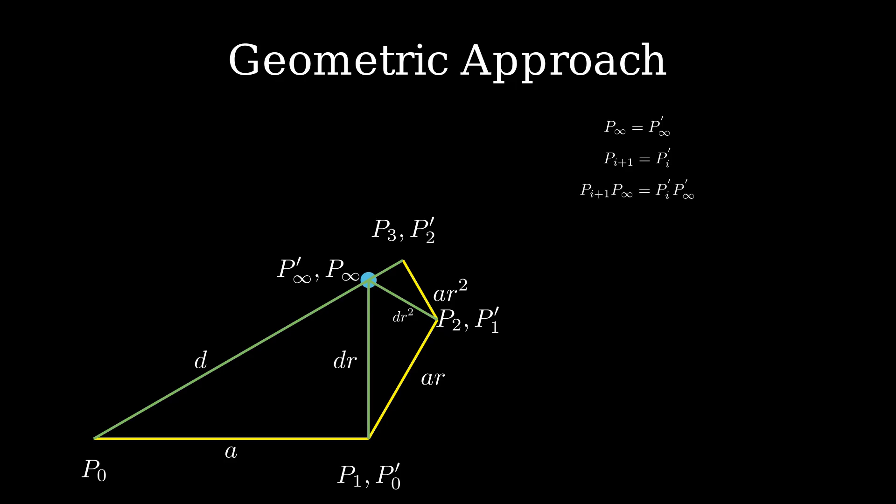Combining these two, we get P_{i+1} P infinity equals P_i prime P infinity prime. What is P_i prime P infinity prime? It is simply R times P_i P infinity due to the way in which we have scaled the figure.